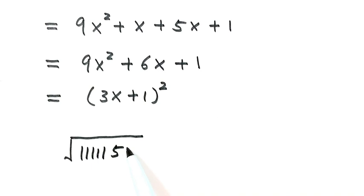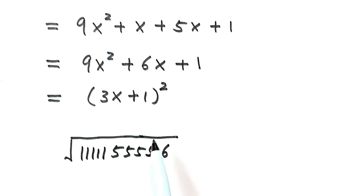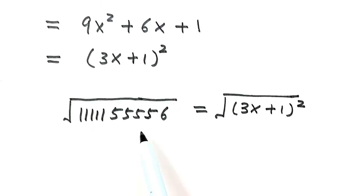What is the square root of this number? Five ones, four fives, then the last one is six. Based on the result here, it equals the square root of 3x plus 1 squared. Since this is a positive number, it's just 3x plus 1.